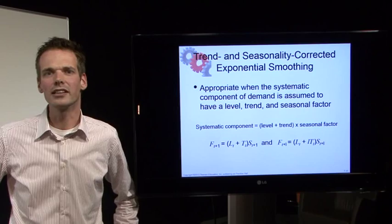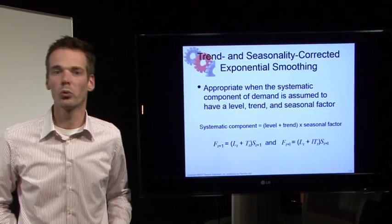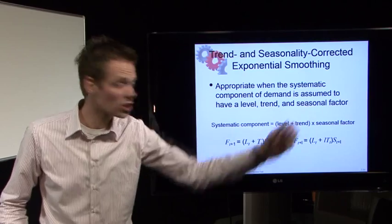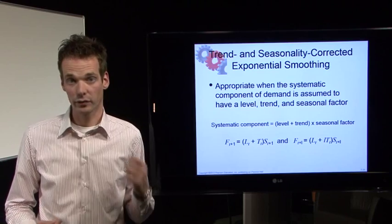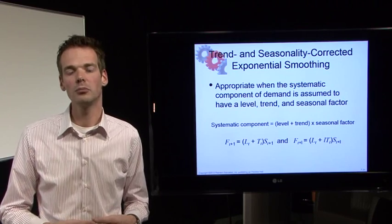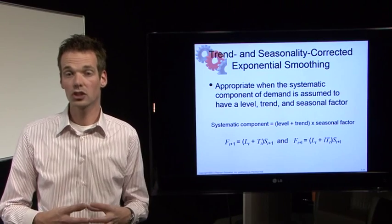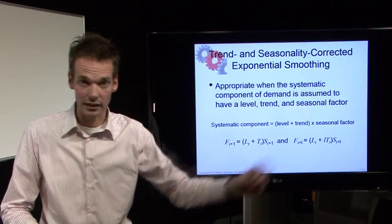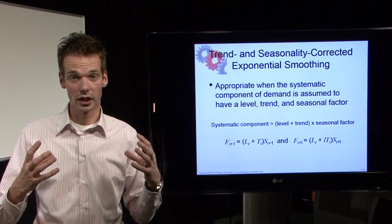Hello and welcome in this video about Winter's model. Winter's model is the model we use when there is a trend, a level, and a seasonal factor. Please recall Holt's model — in Holt's model we only have a trend and a level and no seasonal factor. So if the demand in your supply chain does have a level, a trend, and a seasonal factor in their systematic component, then you use Winter's model.